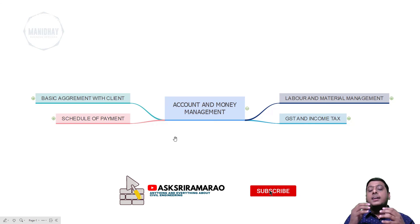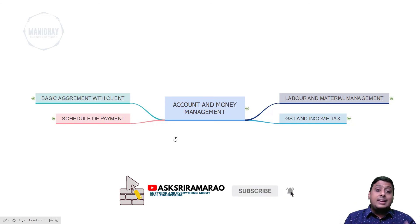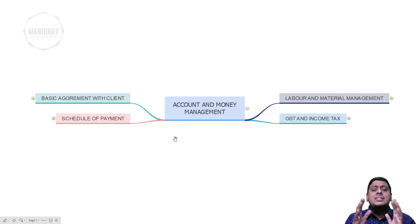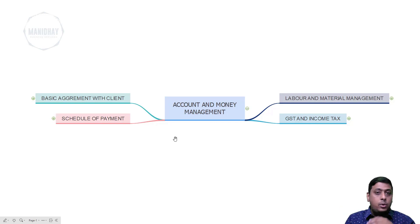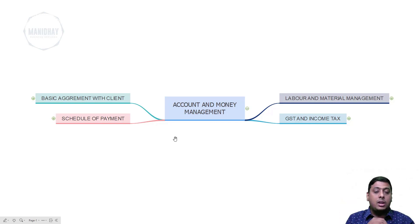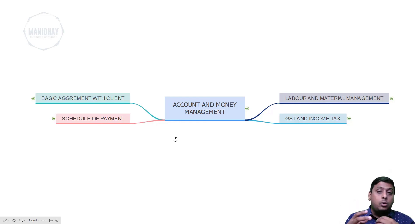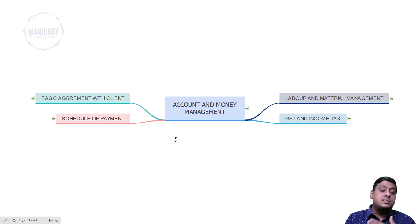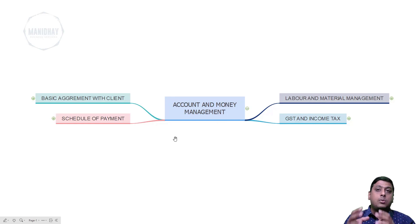To summarize: please get into an agreement with the client, get the work order, and set the schedule of payments properly. Maintain your accounts using a simple Excel sheet — I will discuss how to maintain that Excel sheet in detail in the Q&A session, covering material price variations and controls. This concludes the session on accounts and money management.